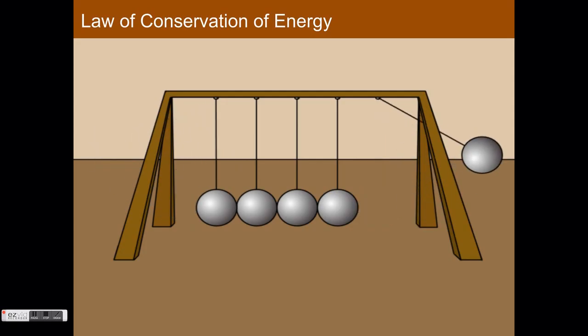The idea is that since energy can't be destroyed, the first ball should transfer 100% of its energy through each of the three stationary balls into the ball on the end, popping that ball up to the same height as the first ball. It should have the same amount of energy as the first ball since all of it was transferred.